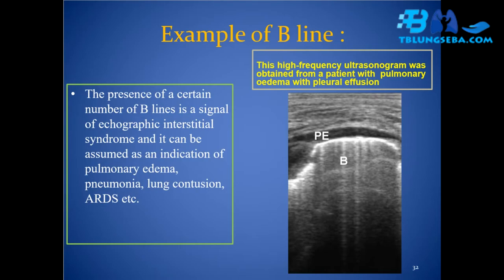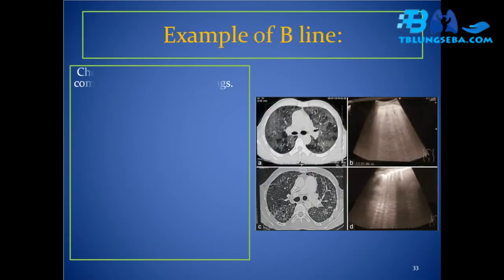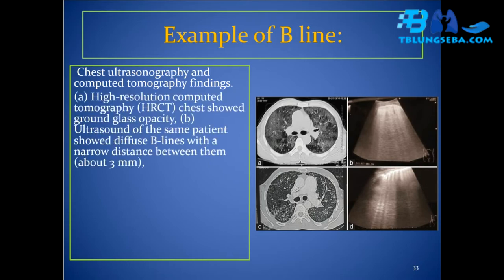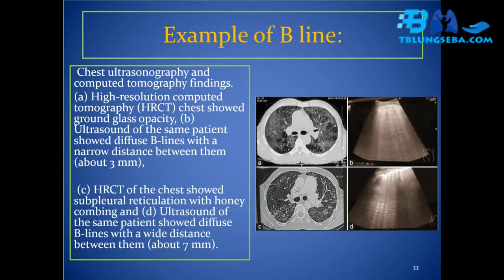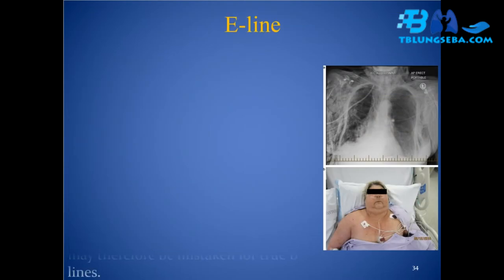Example of B-line: this high-frequency ultrasonogram was obtained from a patient with pulmonary edema with pleural effusion. Chest ultrasonography and CT findings: (A) HRCT chest showed ground glass opacity; (B) ultrasound of the same patient showed diffuse B-lines with a narrow distance between them (about 3 mm). (C) HRCT chest showed subpleural reticulation with honeycombing; (D) ultrasound of the same patient showed diffuse B-lines with a wide distance between them (about 7 mm).